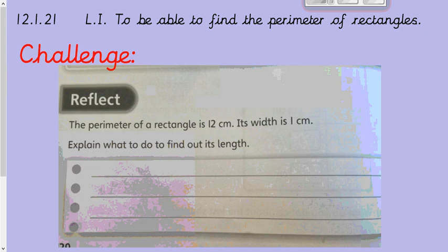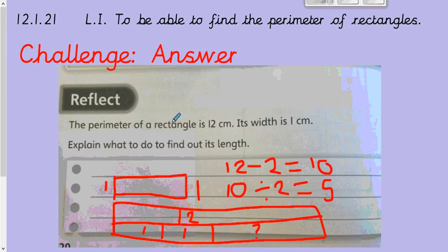Welcome back if you've come back to see the challenge. I'm about to go through the answer, so if you've not done it, pause the video again, because I am going through the answer now. Your challenge question says the perimeter of a rectangle is 12 centimetres, its width is 1 centimetre. Explain what to do to find out its length. As you can see, I've drawn a picture here. I'm using a mouse, so it's not very neat, but this is what you're getting. So I drew a rectangle, and its width is 1, so I know that on either side it's going to be 1 centimetre.